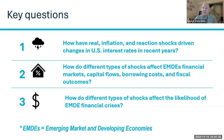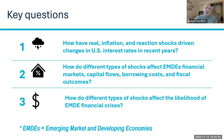I'm going to address three questions in this presentation. First, how have real, inflation, and reaction shocks driven changes in U.S. interest rates in recent years? Second, how do different types of shocks affect EMDEs — emerging market and developing economies — specifically their financial markets, capital flows, borrowing costs, and fiscal outcomes? Third, how do different types of shocks affect the likelihood of financial crises in EMDEs?